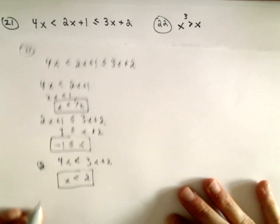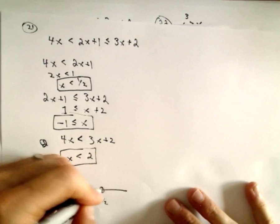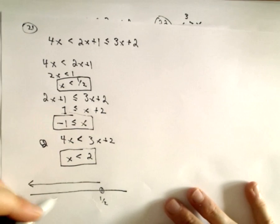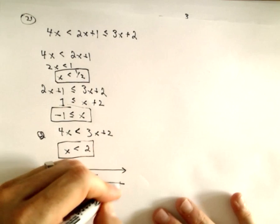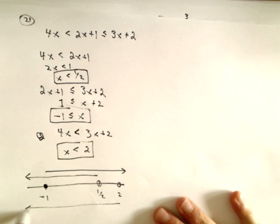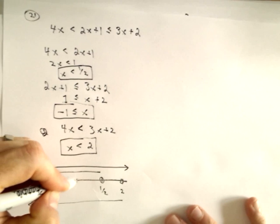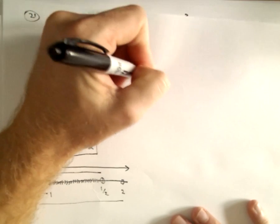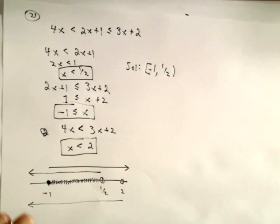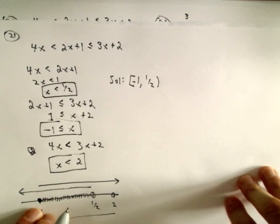So we're trying to satisfy all of these inequalities: x has to be less than one half to satisfy the first inequality, it has to be greater than or equal to negative 1 to satisfy the second inequality, and the third one says it has to be strictly less than 2. You're basically looking for the overlap of all of those regions, and the overlap would be between negative 1 up to one half, including negative 1 but not one half. So the solution set would simply be from negative 1 up to one half. Maybe that problem will help, maybe not — I basically wanted to do it for my own benefit.